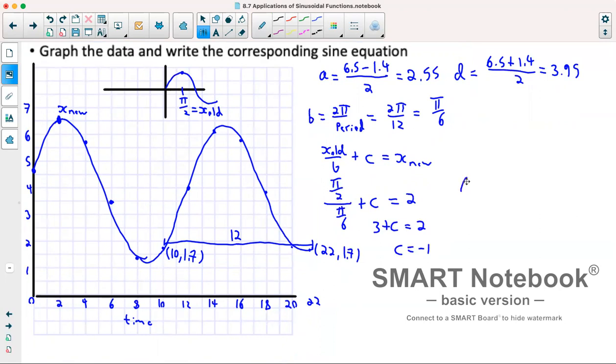So our overall equation would be y is equal to our a, which is 2.55, sine of our b, which is π over 6, x minus our c value, so that becomes plus 1, plus our d value of 3.95.